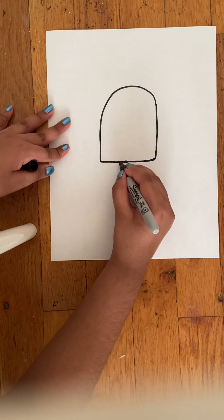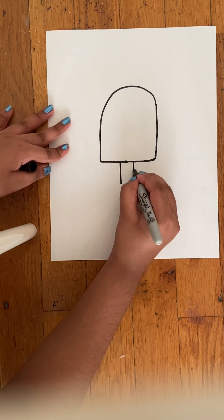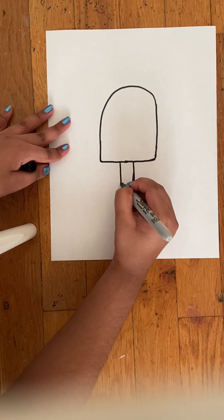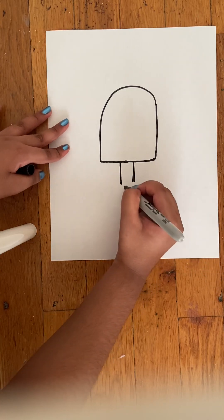Next you want to draw two straight lines coming out from your popsicle and you want to connect them with a curve.